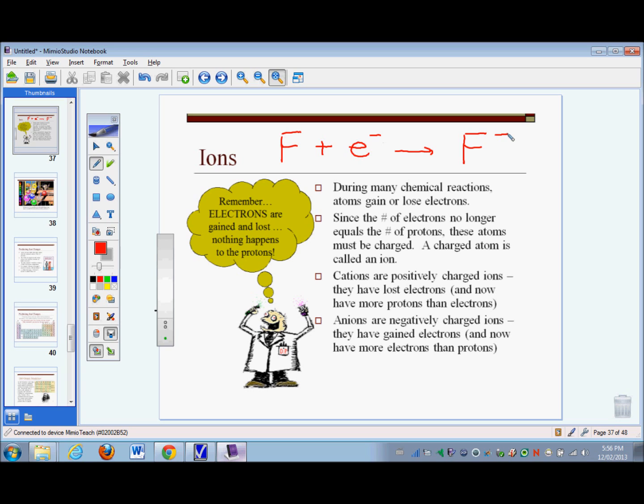I just used the term anion there. There are two types of ions: cations and anions. A cation is a positively charged ion. It's an ion that has lost electrons. If you've lost electrons, then now you've got more protons in your nucleus than you do electrons outside the nucleus, so you'll be positively charged.